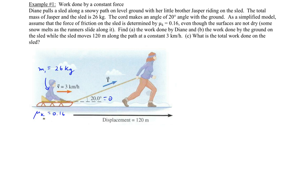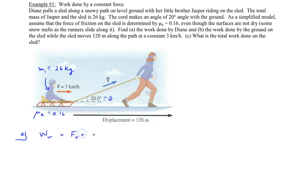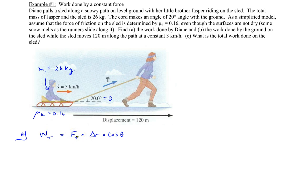In part A we're asked to calculate the work done by Diane — really the work done by the tension force. The work done is the force of tension multiplied by the displacement delta R, given as 120 meters, multiplied by the cosine of the angle between the tension and the displacement, which is 20 degrees. We already know the displacement and the angle; what we need to find is the tension.